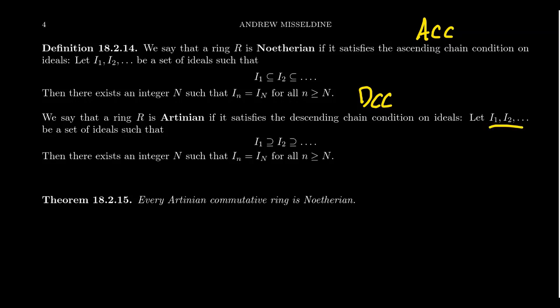all the way up to infinity. If we have a descending chain, so I1 contains I2, which contains I3, which contains I4, then the descending chain condition tells us that there's eventually going to be a number N for which, once you hit capital N, every ideal after that point is actually equal to I_N — so it stabilizes. And so the descending chain condition says that every descending chain of ideals stabilizes at some point.